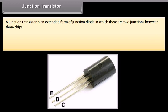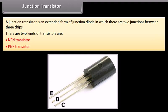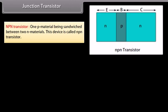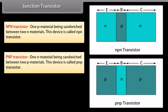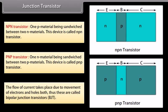Junction transistor: A junction transistor is an extended form of junction diode in which there are two junctions between three chips. There are two kinds of transistors: NPN transistor, where one P material is sandwiched between two N materials, and PNP transistor. The flow of current takes place due to movement of both electrons and holes; thus, these are called bipolar junction transistors.